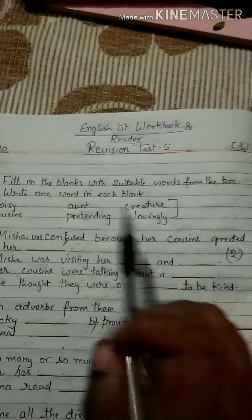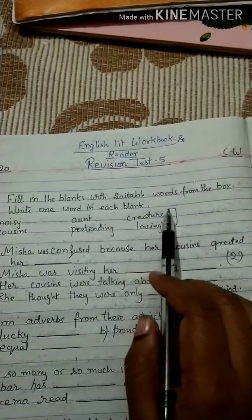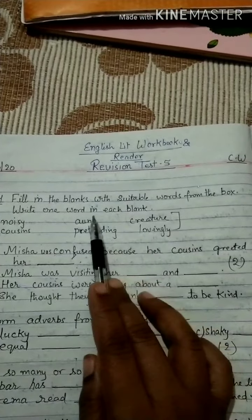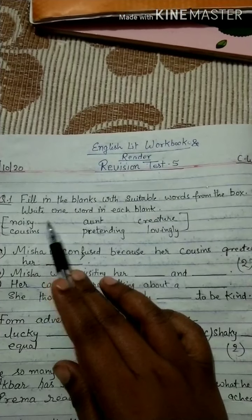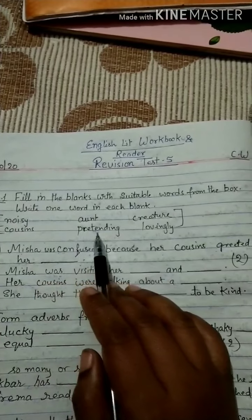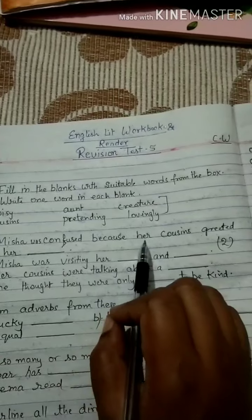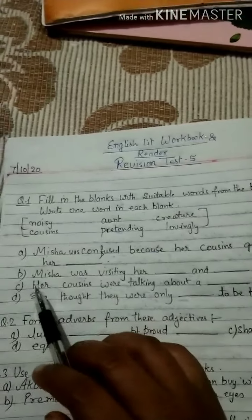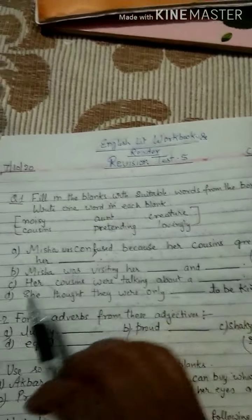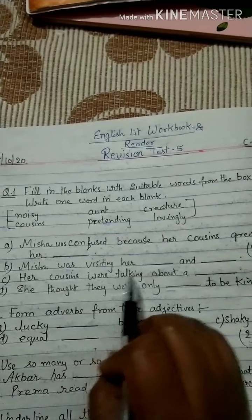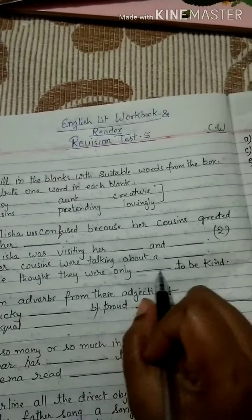Again repeating Question 1: Fill in the blanks with suitable words from the box — noisy, aunt, creature, cousins, pretending, lovingly. A. Misha was confused because her cousins greeted her ___. B. Misha was visiting her ___ and ___. C. Her cousins were talking about a ___. D. She thought they were only ___ to be kind.